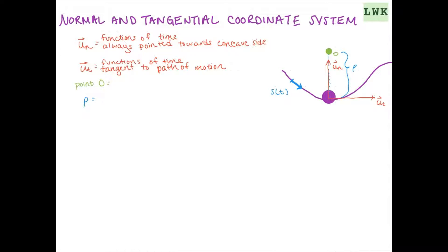So now you can see in our drawing we have a point O. That's our instantaneous center of rotation. So our un axis is always going to be pointed towards our point O.